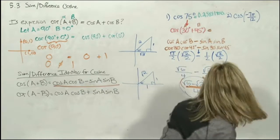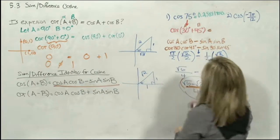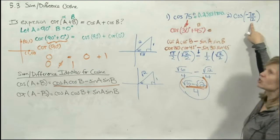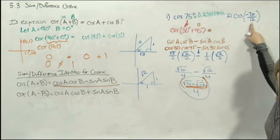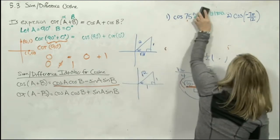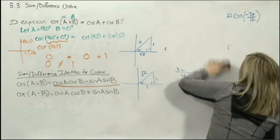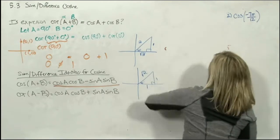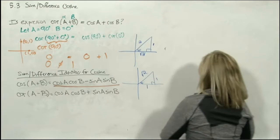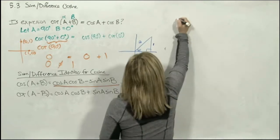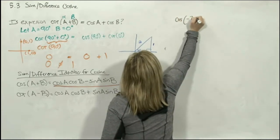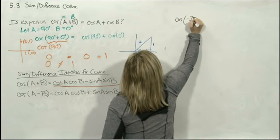Who says the angle has to be given in degrees? Our other unit of measurement is radians. Example 2 says: find the exact value of cosine(−7π/12).